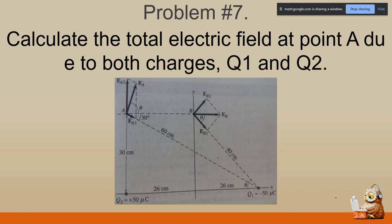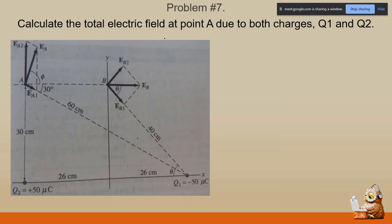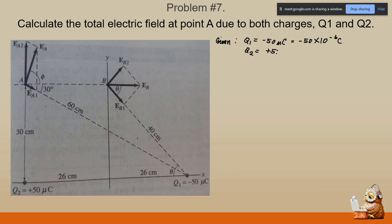Problem number seven: we have to calculate the total electric field at point A due to point charges q sub one and q sub two. Our q sub one is negative fifty microcoulombs, or negative fifty times ten raised to negative six coulombs. Our q sub two is positive fifty microcoulombs, or positive fifty times ten raised to negative six coulombs. Both values have the same magnitude — fifty microcoulombs — but differ in sign.